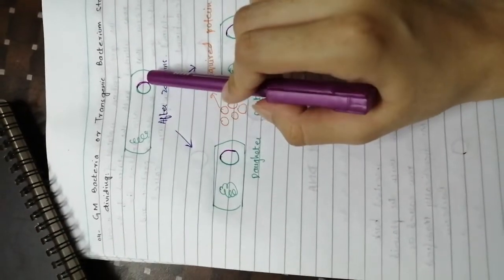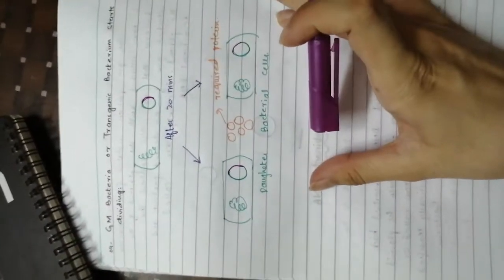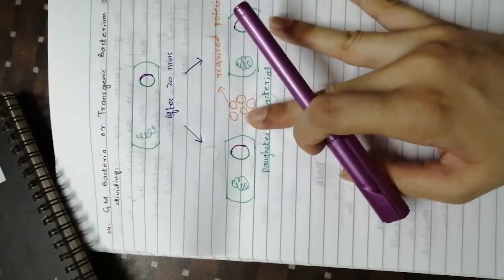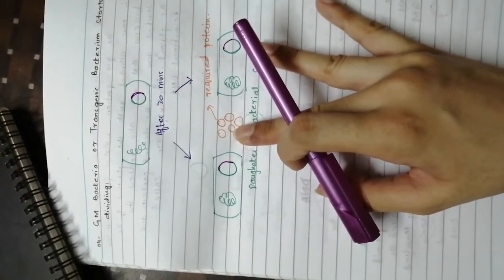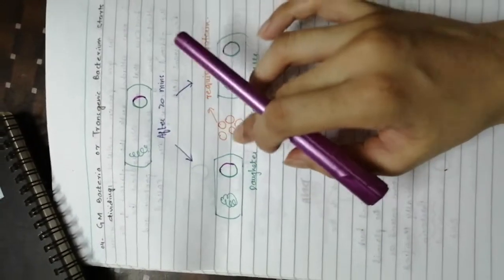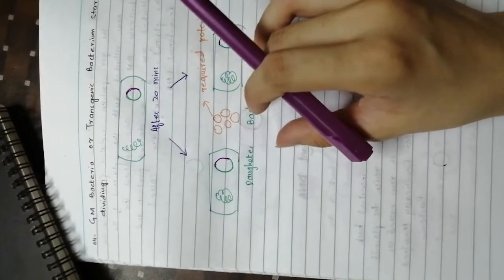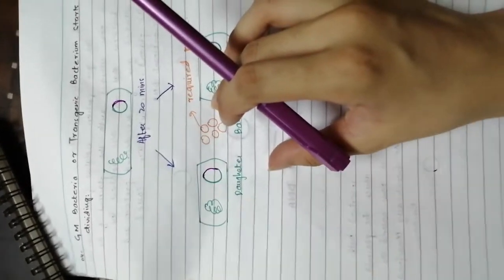One bacteria after 20 minutes that contains recombinant DNA divides into two daughter cells. The recombinant DNA will also be present with all bacteria that we require to produce the protein in your body.